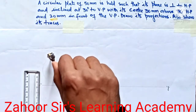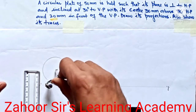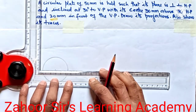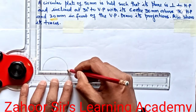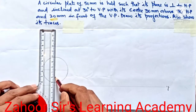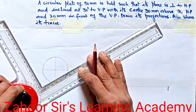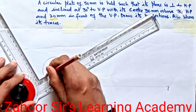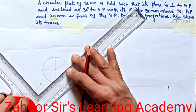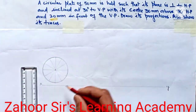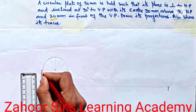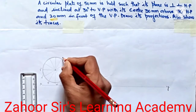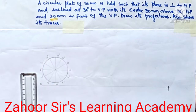Whose center is 30 mm above from the XY line. Next, I will divide the circle into 12 equal parts. I'll take the 30-degree angle and 60-degree angle lines to create the divisions. Now the front view is almost complete. I'll add the notations: calling them 1 prime, 2 prime, 3 prime, 4, 5, 6, 7, 8, 9, 10, 11, and 12.